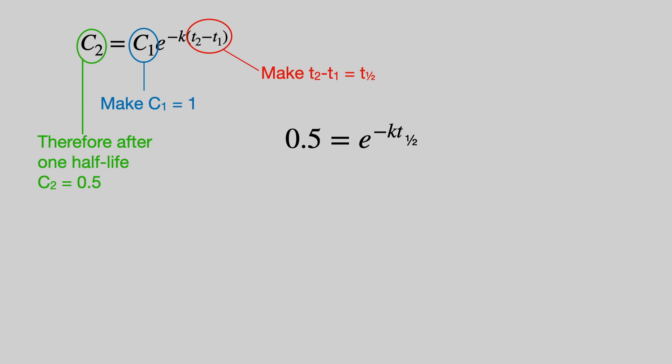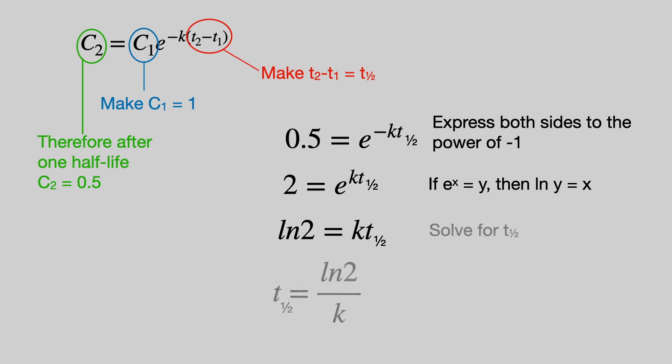And so we can rewrite the equation: 0.5 equals e to the power of minus k multiplied by the half-life. Now without going through this step by step we can rearrange the equation and express it in terms of half-life.